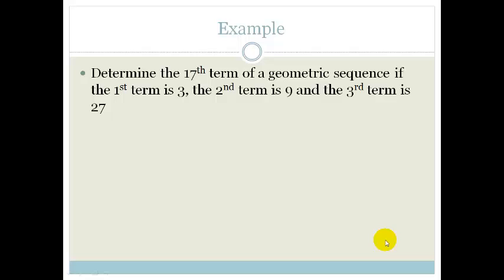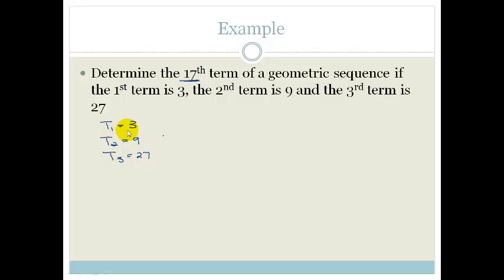Determine the 17th term of the geometric sequence if the first term T1 equals 3, T2 equals 9, and T3 equals 27. Our first term is 3, which we're going to call A. To find our common ratio — they told us it's a geometric sequence, so we don't have to go and compare it and prove. We just say the common ratio is T2 divided by T1.